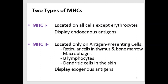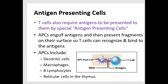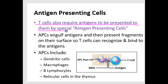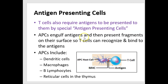An antigen-presenting cell would be a dendritic cell in the skin, a macrophage, a B lymphocyte, or a reticulocyte. They are absolutely required for T cells to actually recognize an antigen — T cells require antigens to be presented to them. An antigen-presenting cell will engulf an antigen and then present fragments on its surface so that T cells will recognize and bind.